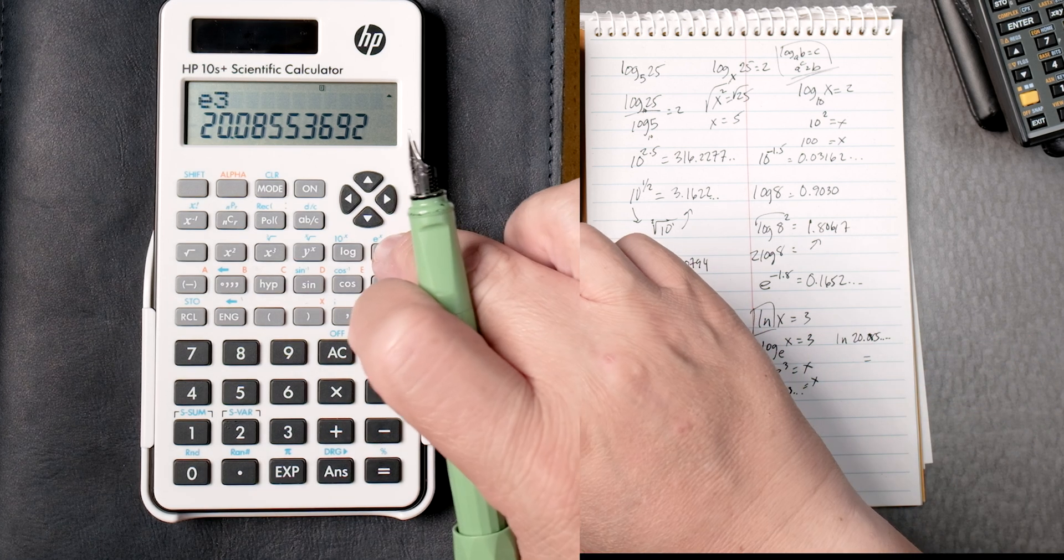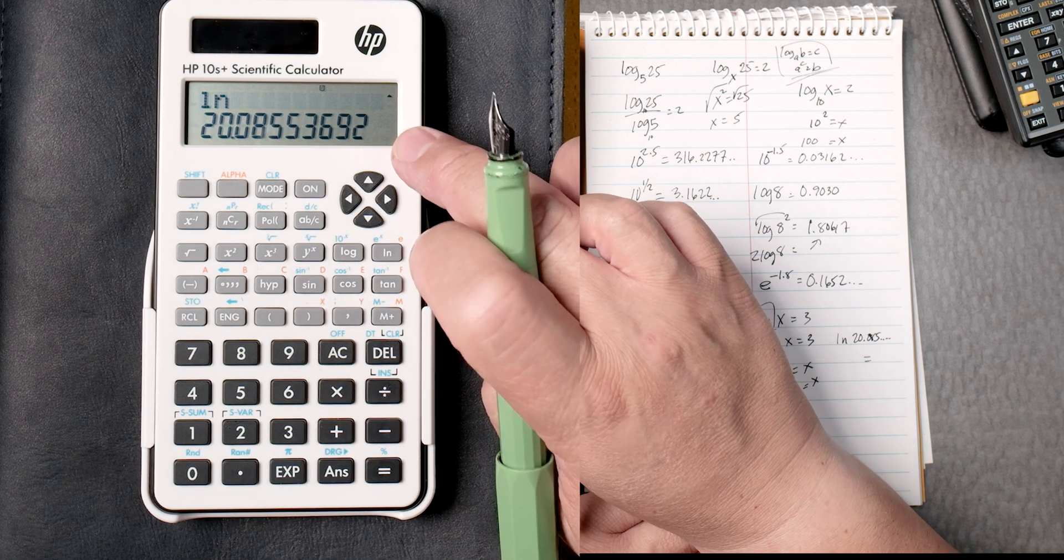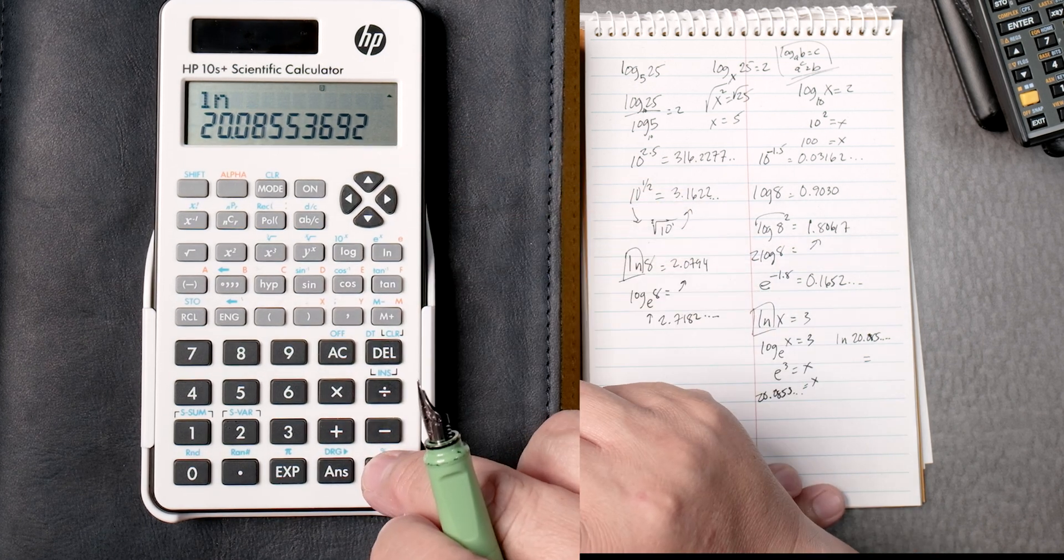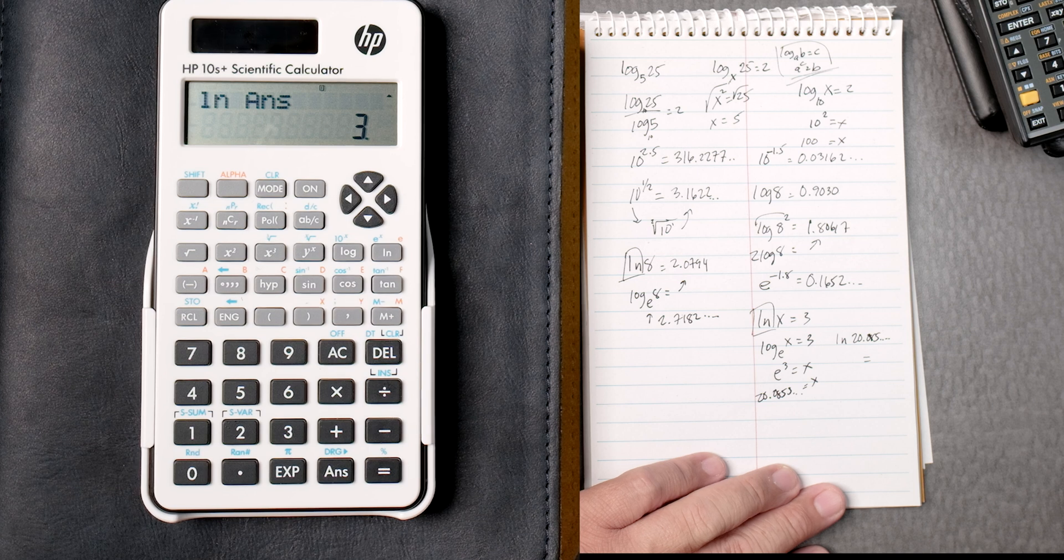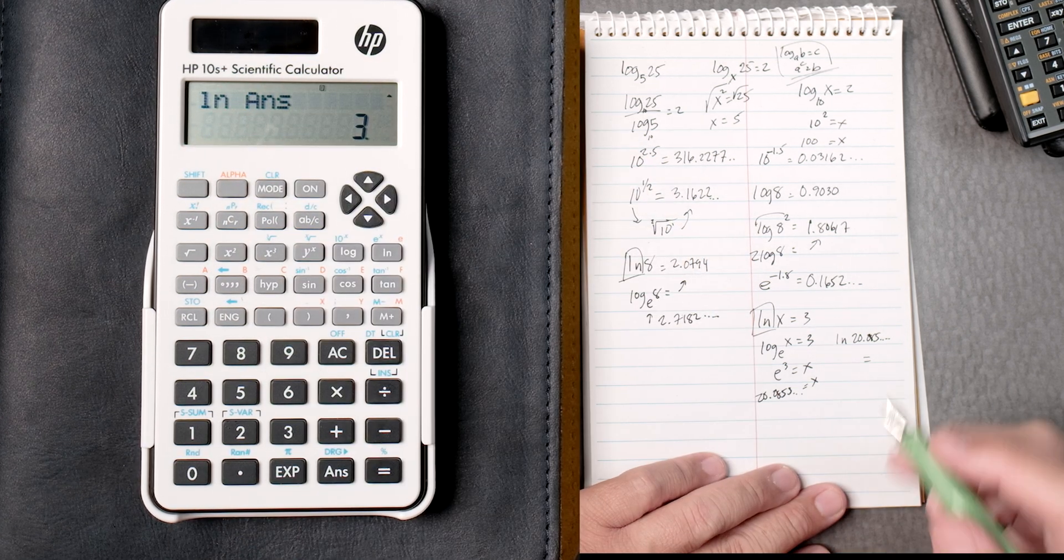So if you press log and then, if that number is there, can we just press equals? Yeah, there it is. Whatever that number is, that's the answer. I guess that's the way around it. And that's equal to 3.